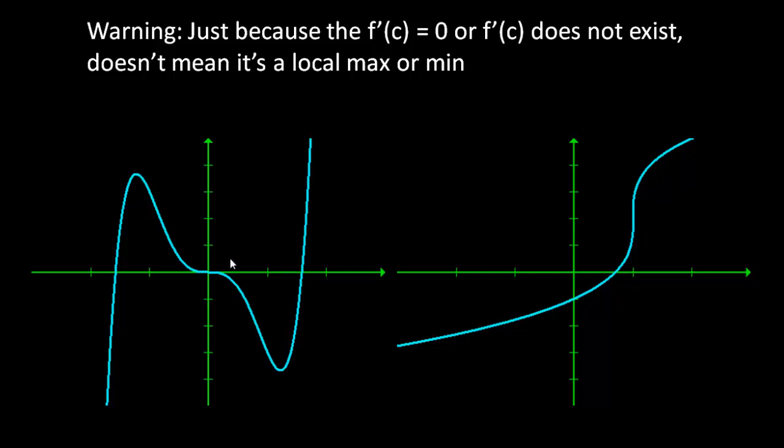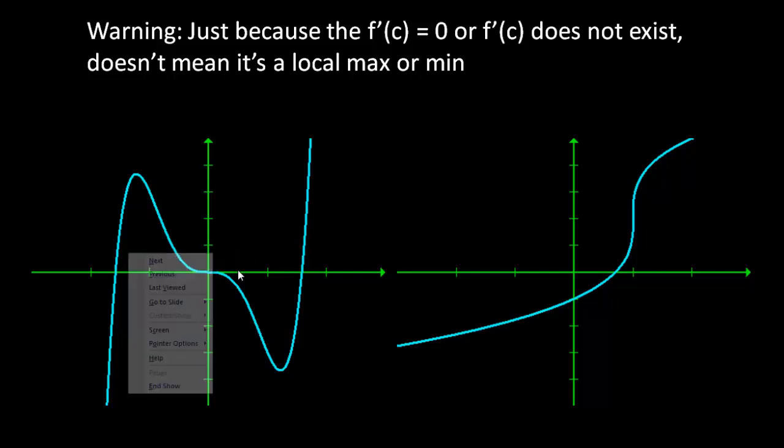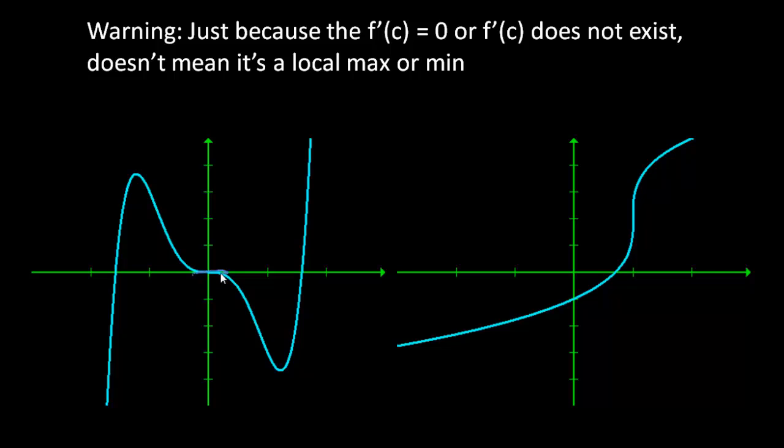So going back to this, right here we have a slope of zero, f prime of c equals zero, but it's not a local max or min. It flattens out, but then it goes back down again, so it doesn't have a peak or a dip.